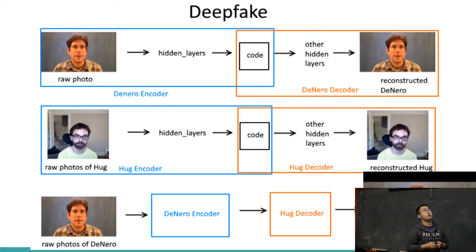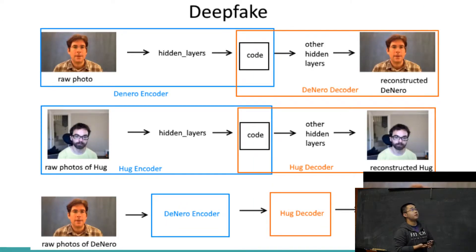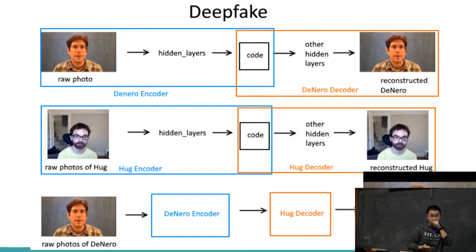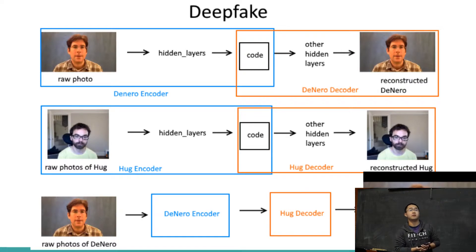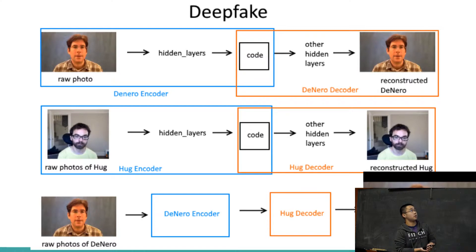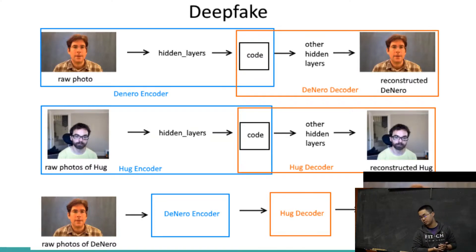A popular application of autoencoders is deepfake face swapping. During the last few weeks, we tried our hands on an existing GitHub repo in which we swapped Josh Hogg's face onto Robert De Niro in one of 61A's lecture videos.